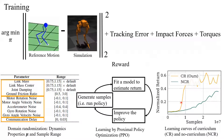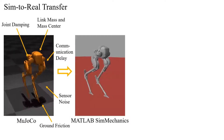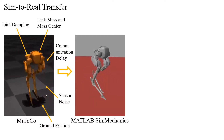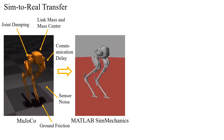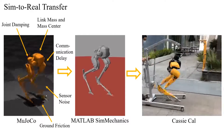This curriculum helps prevent the policy from adopting excessively conservative sub-optimal behaviors such as simply standing in place. The yellow curve shows learning with curriculum, and the green curve shows learning without — without curriculum, the policy learns much more slowly and achieves a lower return. The working policy is trained in MuJoCo simulation with domain randomization, then tested extensively in MATLAB Simulink, a high-fidelity simulated environment, and finally deployed and validated on hardware.